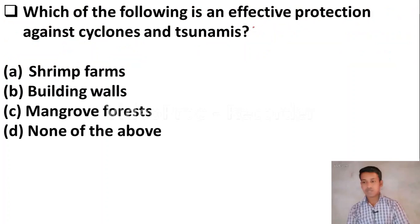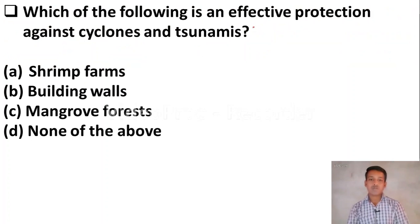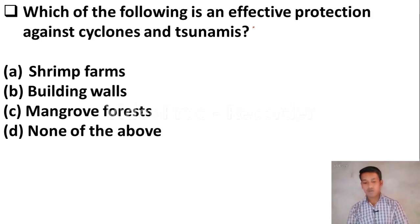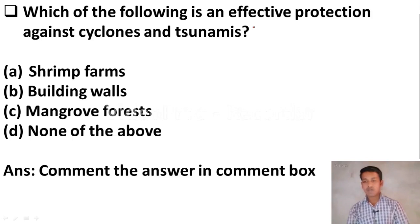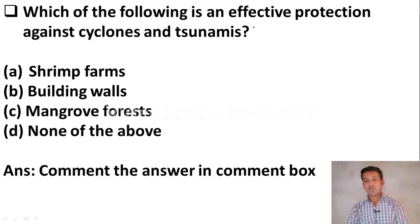Next question: which of the following is an effective protection against cyclones and tsunamis? Option A, shrimp farms. Option B, building walls. Option C, mangrove forests. Option D, none of the above. This question is kept for you — you have to comment the answer in the comment box. This will help me assess your preparation and bring more questions.